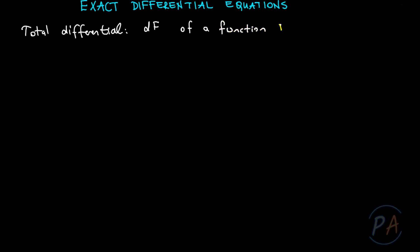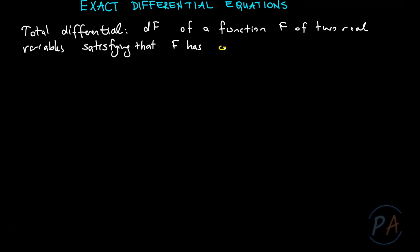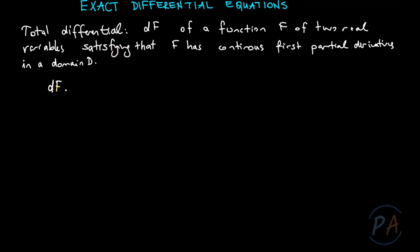The total differential — let's symbolize it as DF — of a function f of two real variables, satisfying that f has continuous first-order partial derivatives in a domain D, is defined as: dF equals the partial derivative of f with respect to x times dx, plus the partial derivative of f with respect to y times dy.